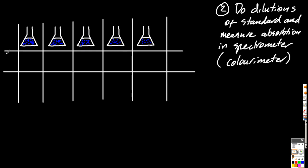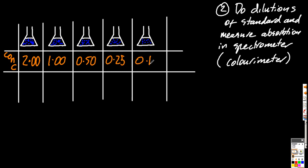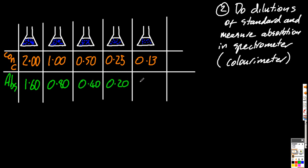So let me fill in some data. Concentration at the top, and absorbance — how much of this orangey-red light has been absorbed — down the bottom. This data I would get from my colorimeter.